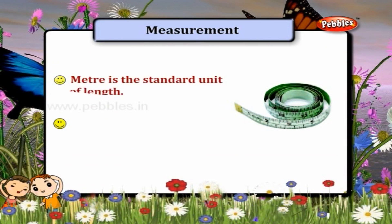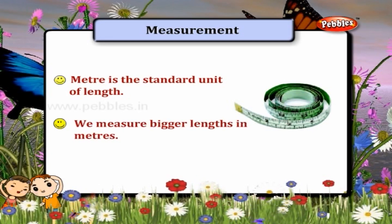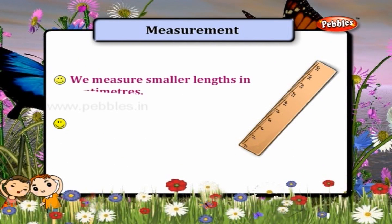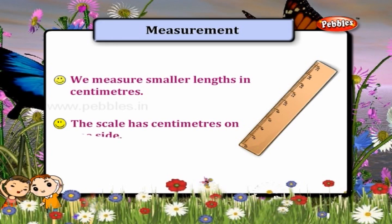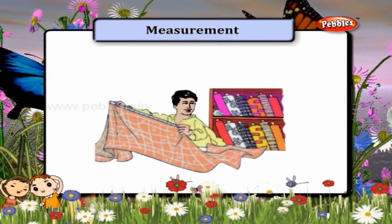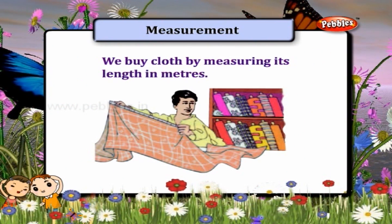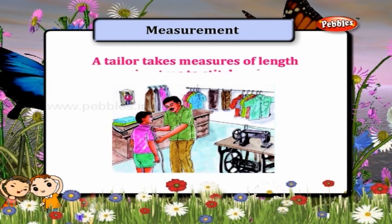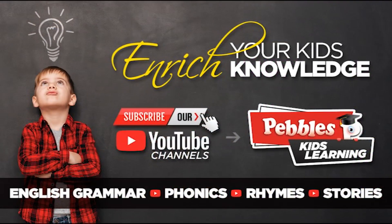Meter is the standard unit of length. We measure bigger lengths in meters and smaller lengths in centimeters. The scale has centimeters on one side. We buy cloth by measuring its length in meters. A tailor takes measurements in centimeters to stitch a shirt.